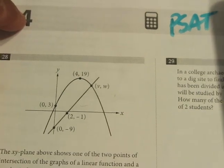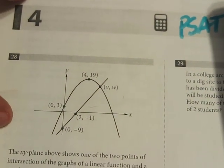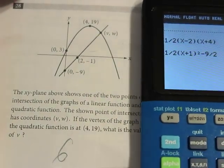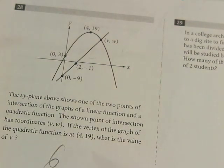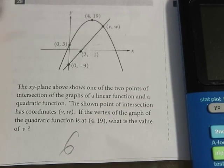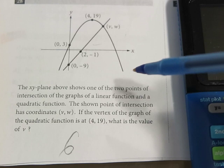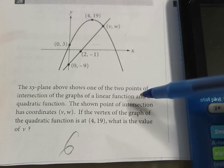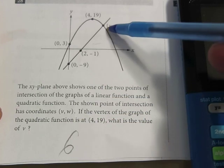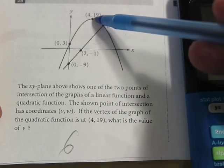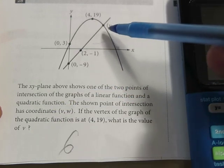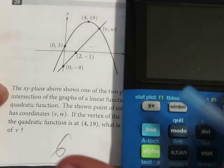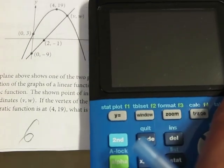Alright, let's go to the next one. Okay, I got a couple more to do, and then I wrap it up. Now this one comes from the PSAT, from the number one, the practice test one for the PSAT. And I think it's a really good problem. And I'm actually putting in kind of a plug for one of my other programs while I do this. Okay, I'm going to read this, and then I'm going to show you how I would solve this. So it says the xy plane above shows one of the two points of an intersection of the graph of a linear function and a quadratic function. The shown point of intersection has a coordinate of vw.